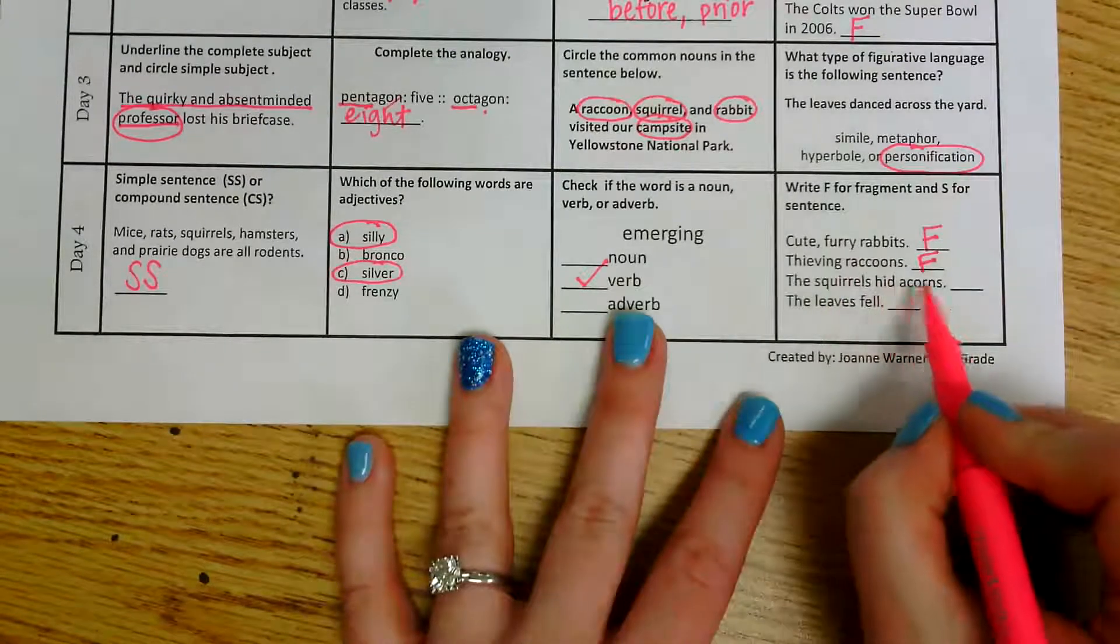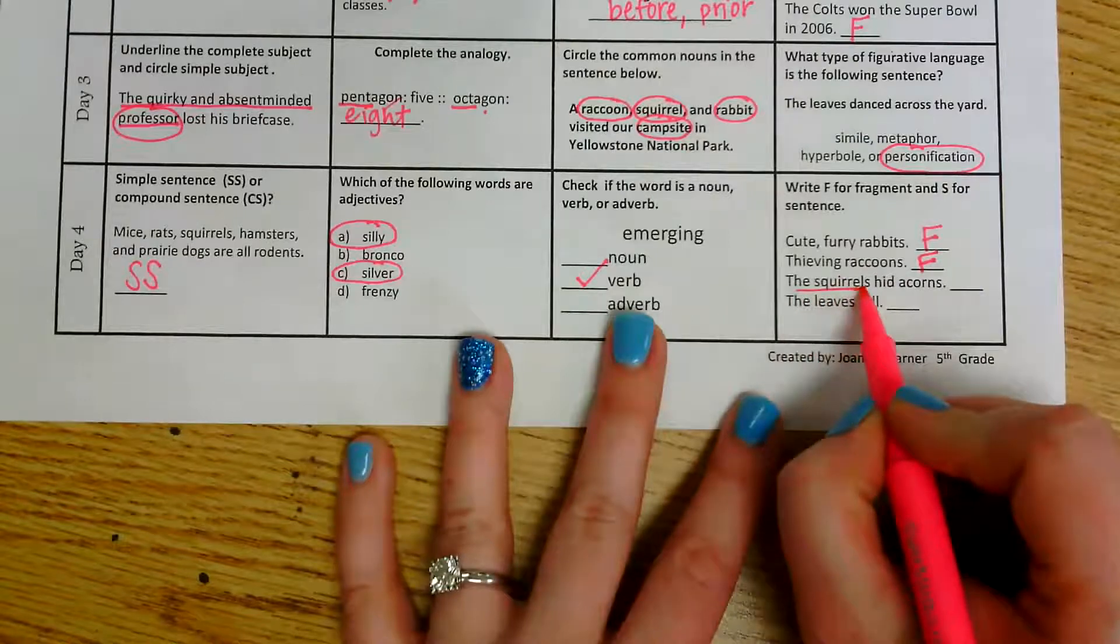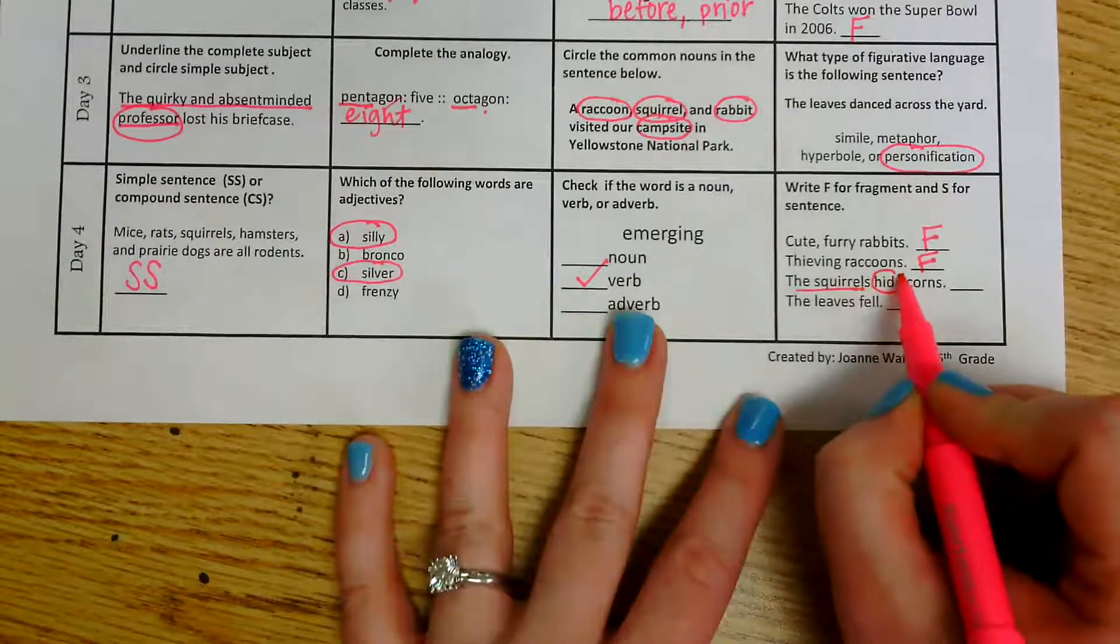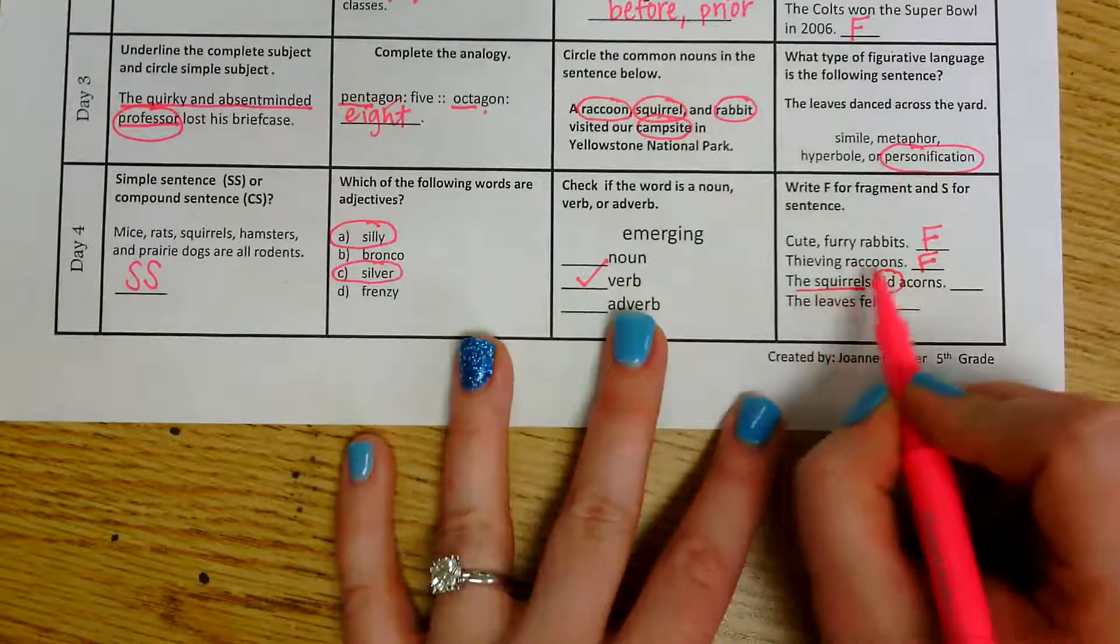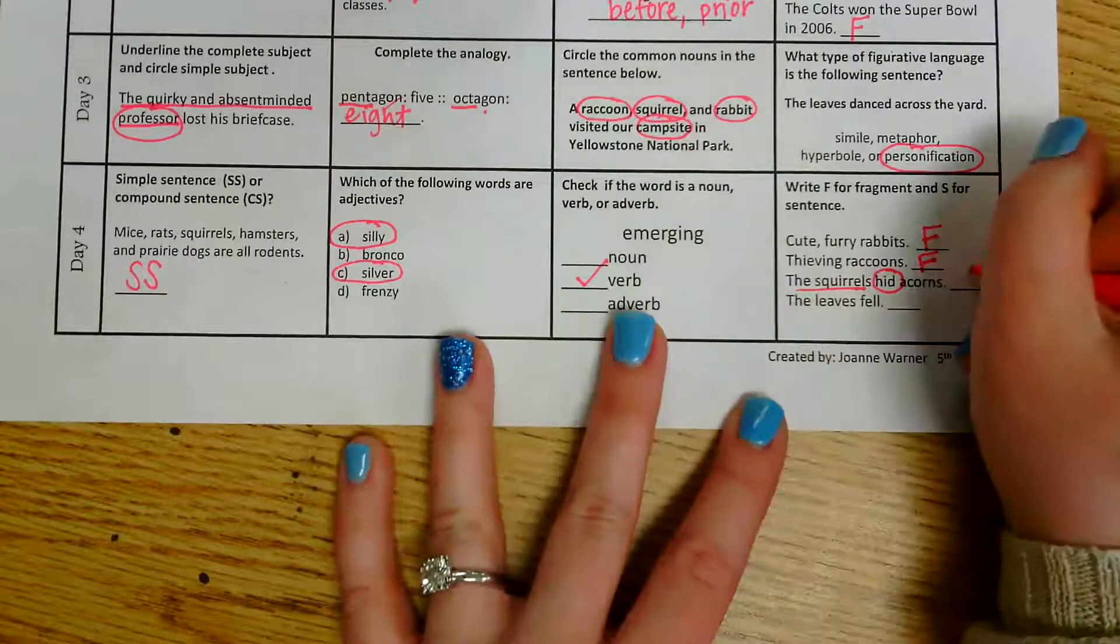The squirrels hid acorns. I see a subject here and I see what they do. So I do have a subject and a predicate. So this one would be a sentence.